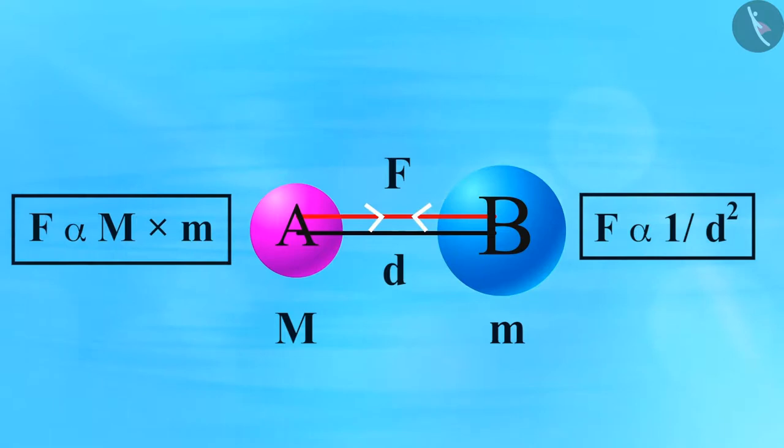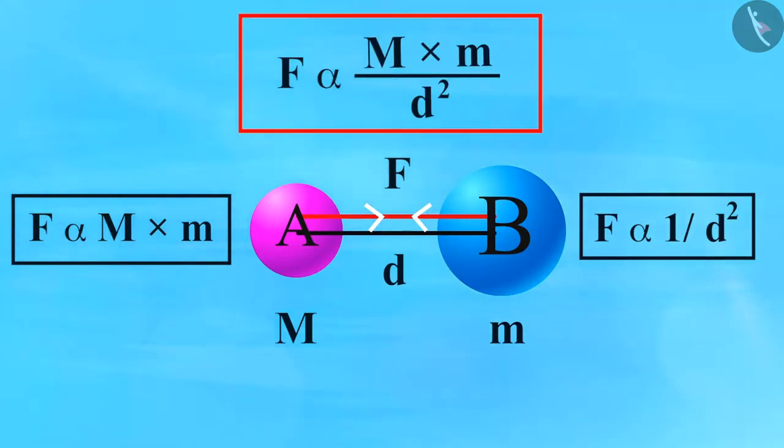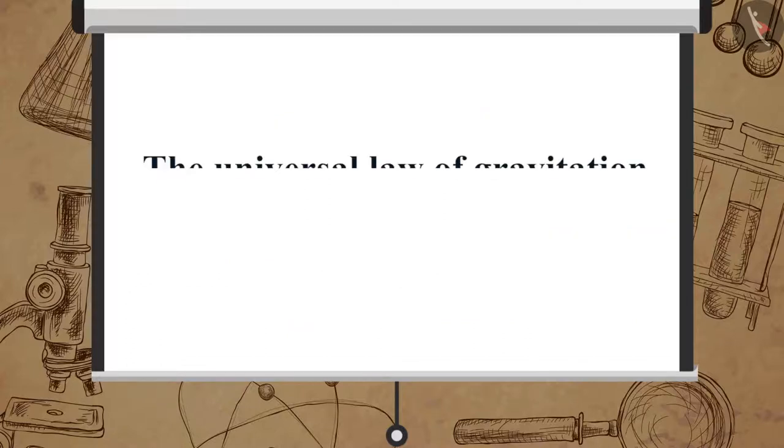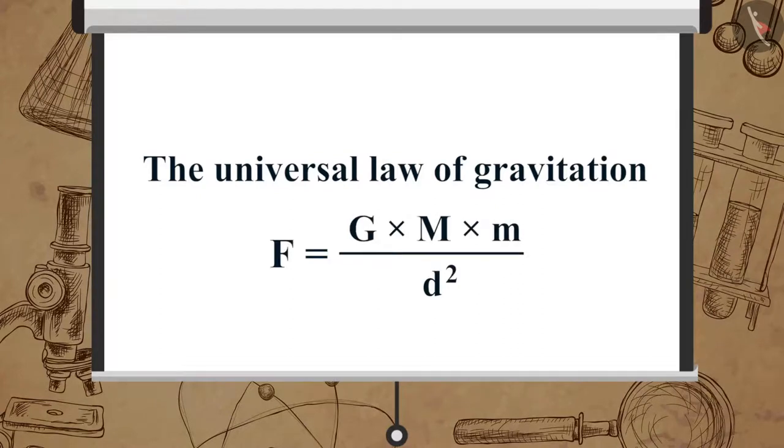Combining these two equations we get F is directly proportional to M multiplied by m upon d square, or F is equal to G multiplied by M multiplied by m upon d square, where G is the constant of proportionality or universal gravitation constant. So here we can sum up the universal law of gravitation as F is equal to G multiplied by M multiplied by m upon d square.